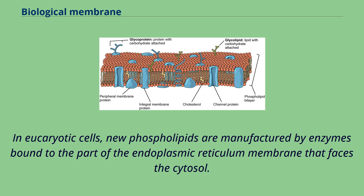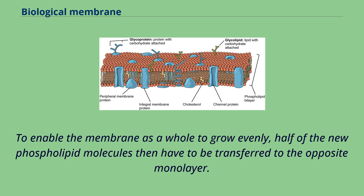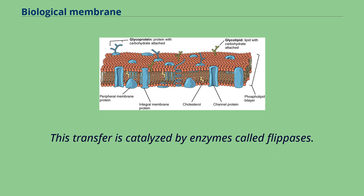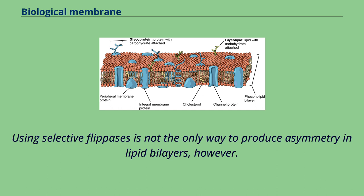These enzymes, which use free fatty acids as substrates, deposit all newly made phospholipids into the cytosolic half of the bilayer. To enable the membrane as a whole to grow evenly, half of the new phospholipid molecules then have to be transferred to the opposite monolayer. This transfer is catalyzed by enzymes called flipases. In the plasma membrane, flipases transfer specific phospholipids selectively, so that different types become concentrated in each monolayer.